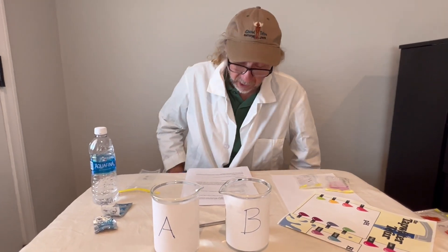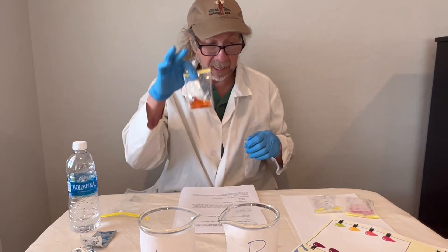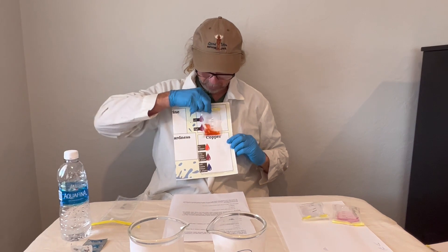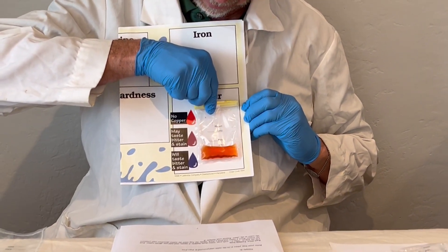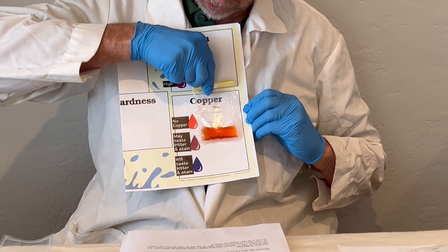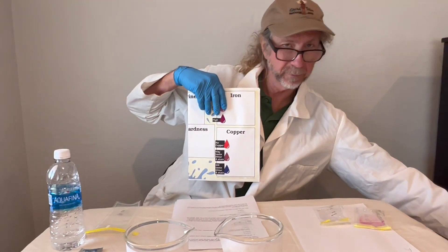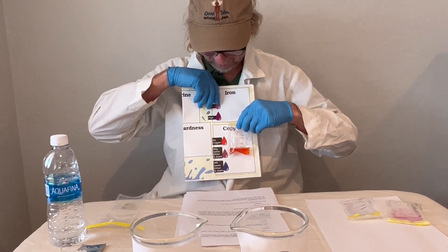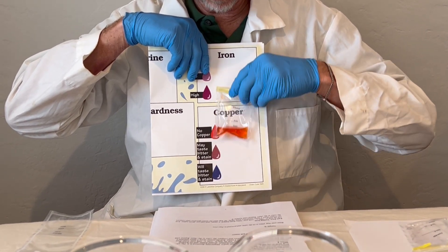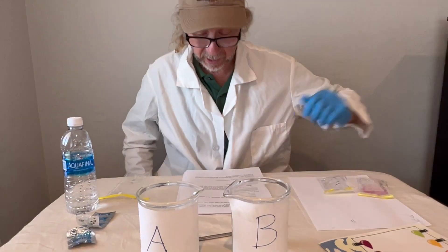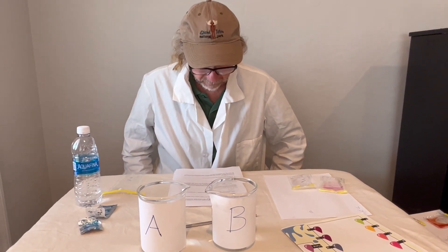Let's go to page seven: testing copper. We're going to do the same thing as before. Here is sample A for copper. The first option is no copper. The second may taste bitter and stain because there's some copper. The third will taste bitter and will stain because there's a lot of copper. Which one is it for A? Now watch this one for B. Which one does it most match up with? Of the three possibilities, which one for A and for B? Copper stains porcelain — things like toilets, sinks, and bathtubs — a greenish blue color. Are these samples likely to cause stains?